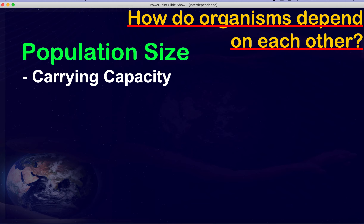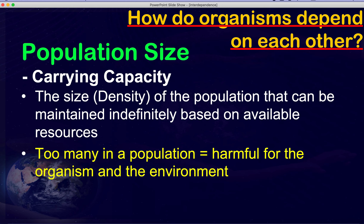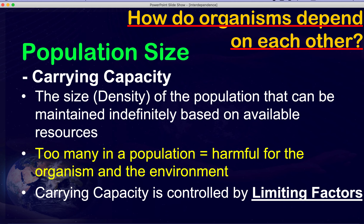Carrying capacity is the size of a population of any species that can be supported by the available resources. If there are too many of that species and not enough resources, it will be harmful to the organism — which will die off — or harmful to the environment, as we saw with the elk eating all the grass. What controls carrying capacity? That's the limiting factors.